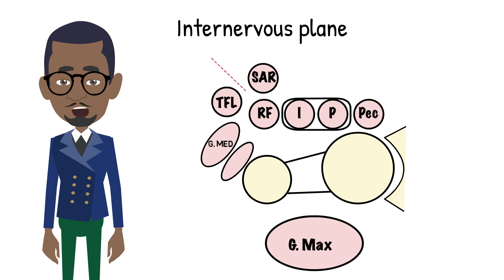Superficial dissection is between sartorius and tensor fasciae latae. Deep dissection is between rectus femoris and gluteus medius.